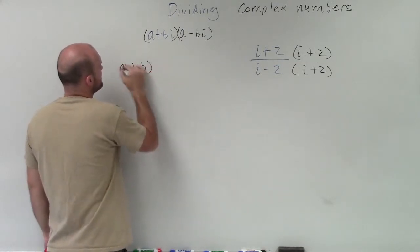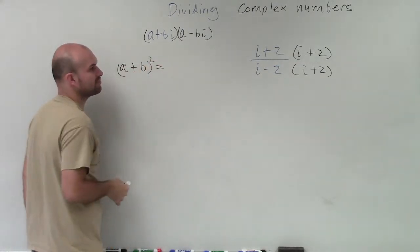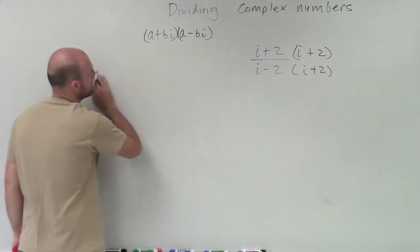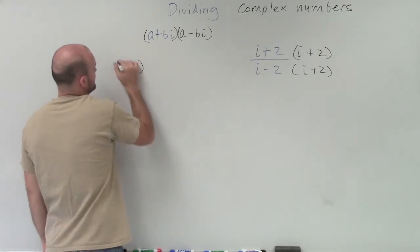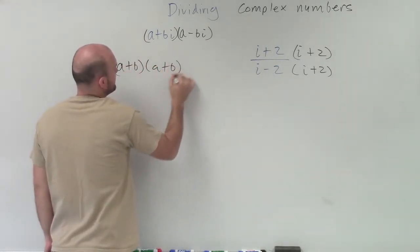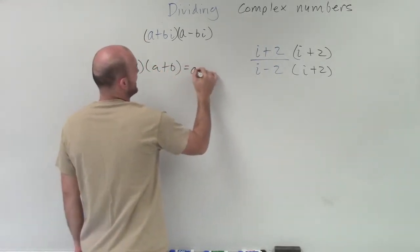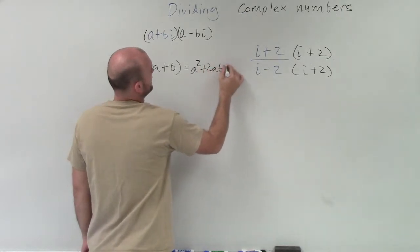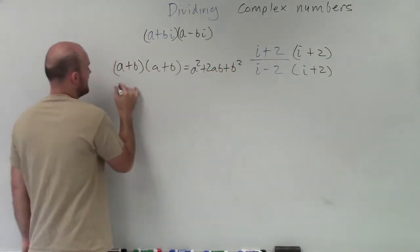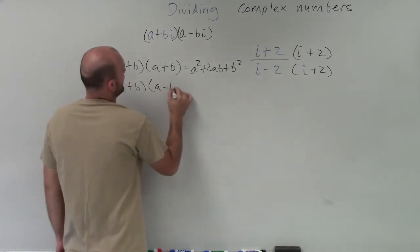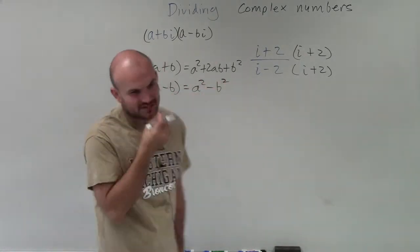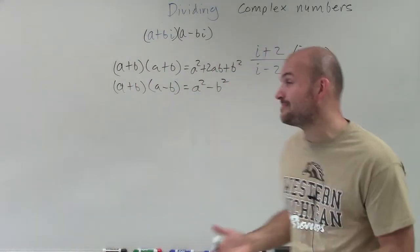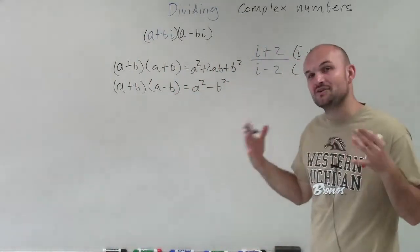If I had a plus b times a plus b, the product of that is a squared plus 2ab plus b squared. And if I had a plus b times a minus b, that is a squared minus b squared. So these are two different products that we've talked about multiple times.